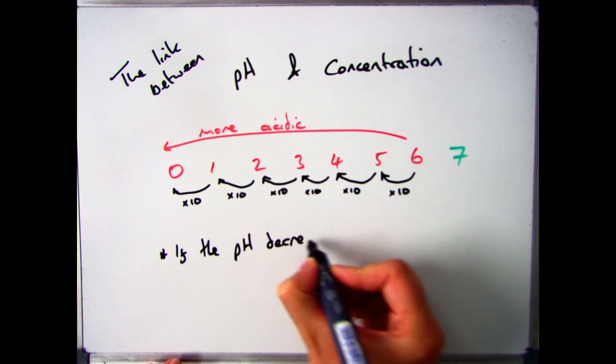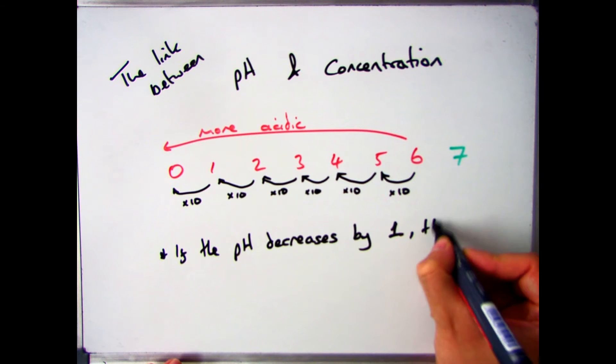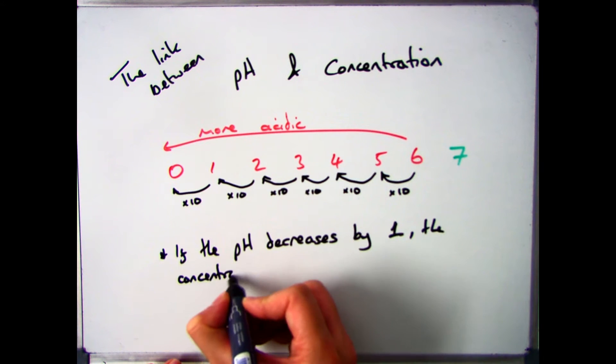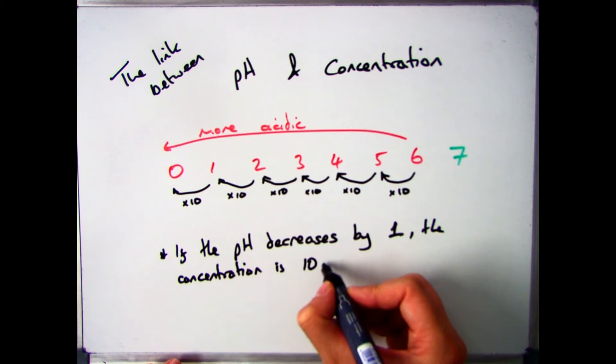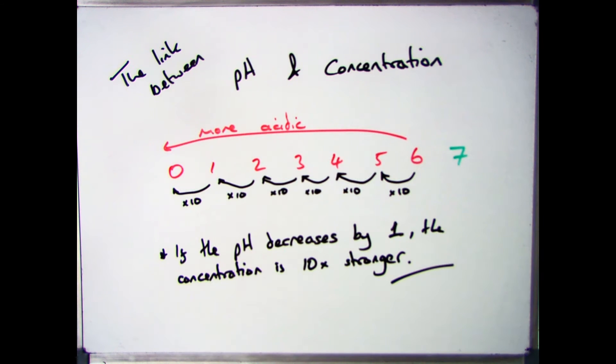So there are two types of things you could be asked here: as you decrease the pH by 1, what happens to the concentration? Or, as you decrease or increase the concentration, what happens to the pH? So we're going to have a look at an example.